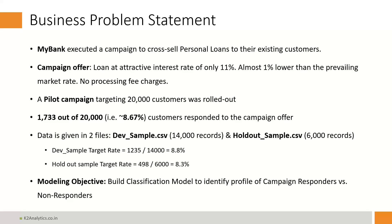After the campaign execution — which ran for a period of one month — there were 1,733 customers out of 20,000 who responded to this offer. The bank has split this entire data into two datasets: a development sample (your training set) and a holdout sample (your testing set). The overall response rate is around 8.67%. The modeling objective is to build a classification tree model.